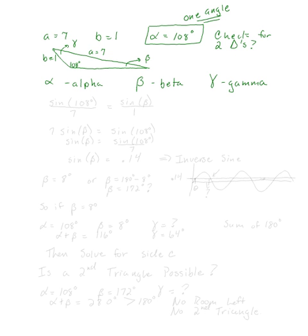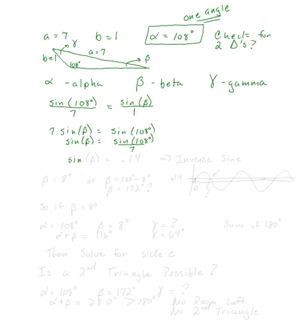I'm going to go ahead and solve without doing any testing ahead of time. I'm going to say sine of 108 degrees over seven — the side opposite that goes on the bottom — and then I'm going to solve for angle beta. I have to solve for beta next; I can't solve for gamma because I don't know the angle or the side that goes with that. So sine beta over b equals one goes on the bottom. When I solve for sine beta, I get seven times sine beta equals sine of 108 degrees, so sine of beta equals sine of 108 degrees divided by seven, which is .14.